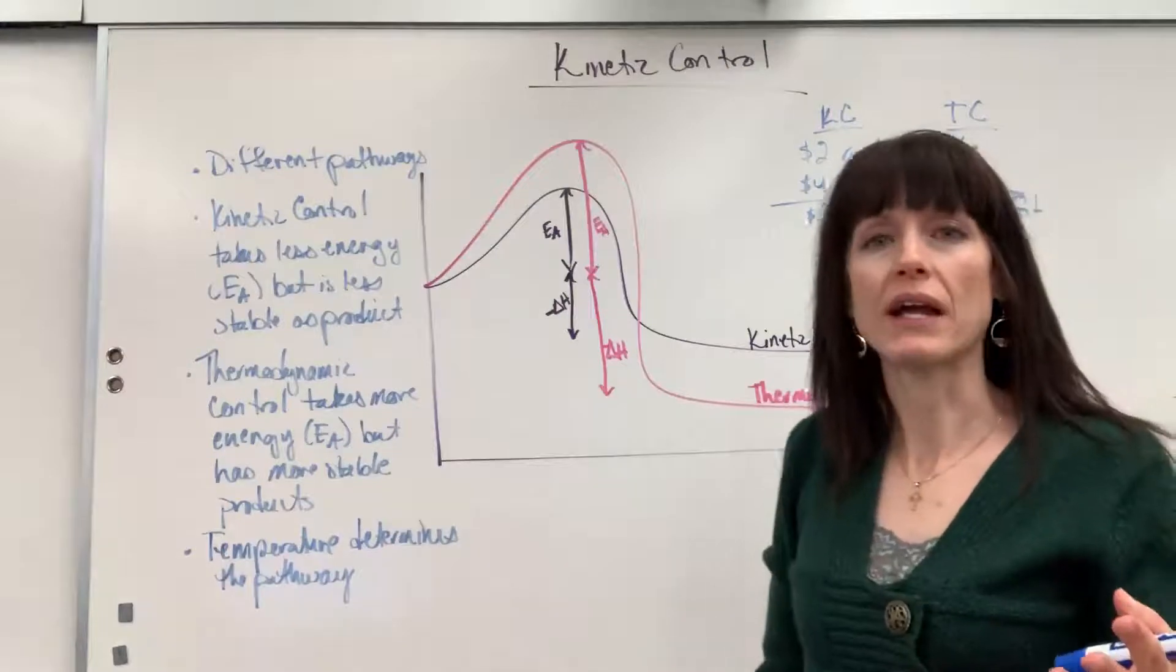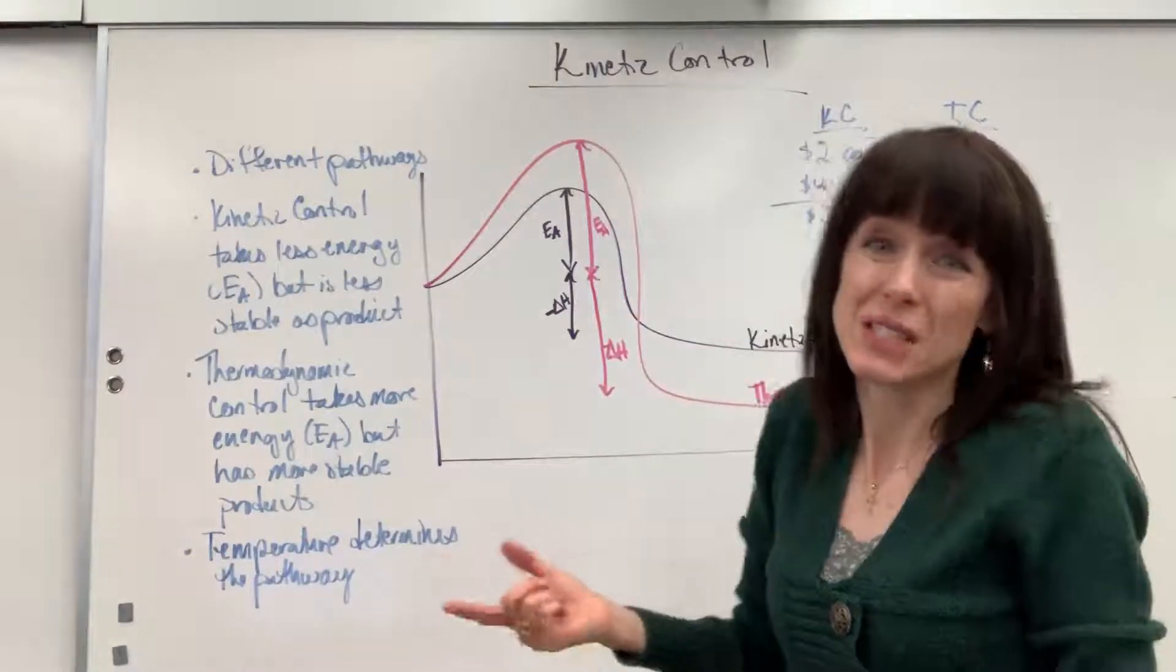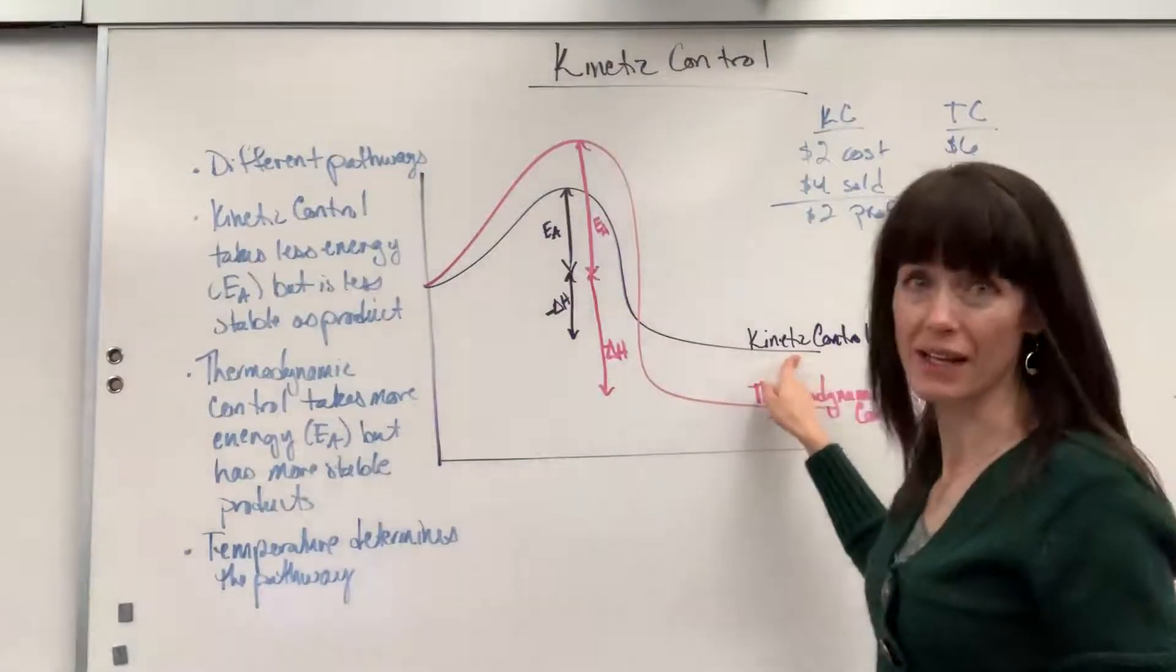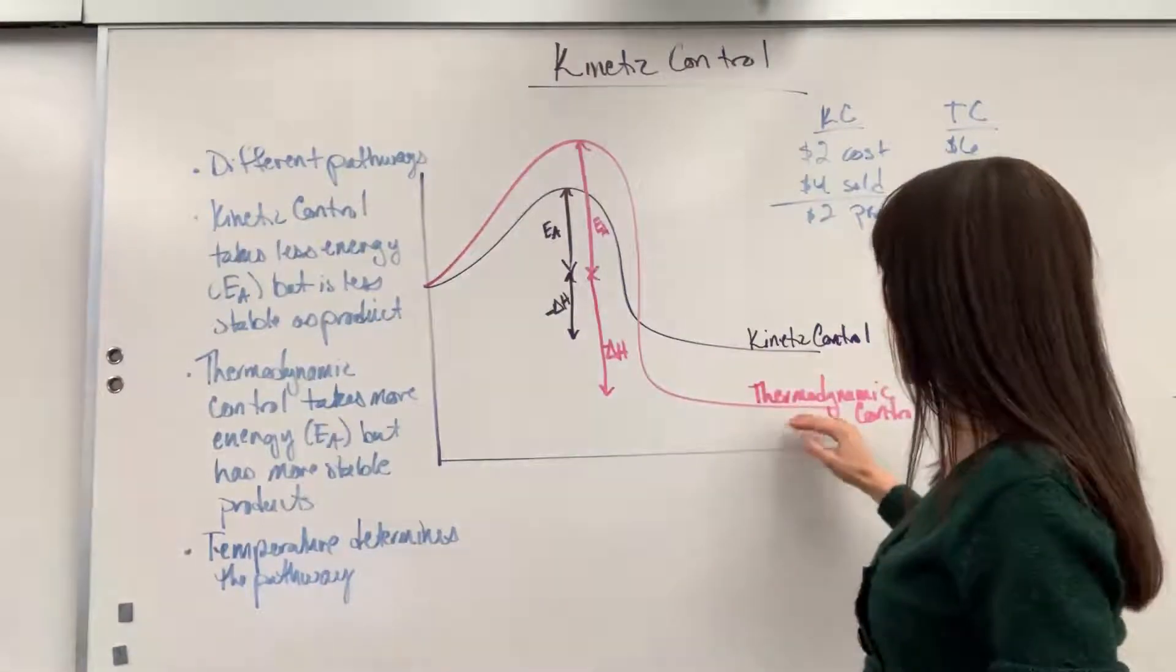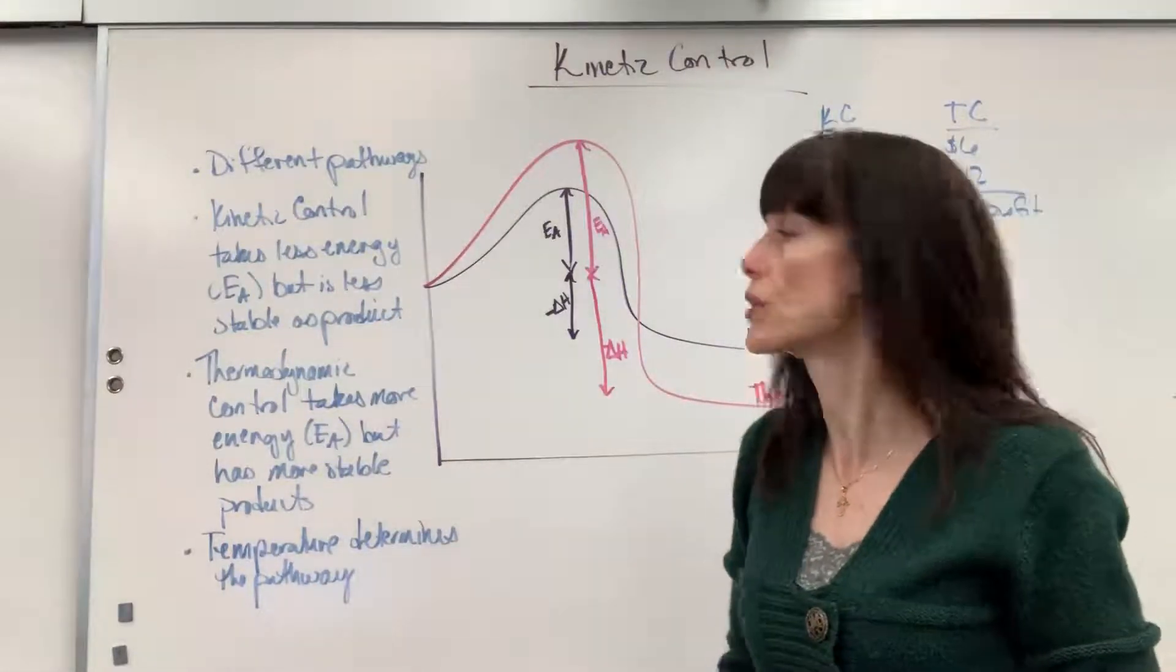So if you see rates that go really fast, those typically are going to be under kinetic control. Really stable products, those probably came from thermodynamic control.